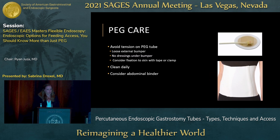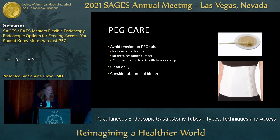Care after PEG tubes is really important to prevent complications including early dislodgement. The key is avoiding tension on the PEG tube — keep that external bumper loose, as it often swells for the first 48 hours after tube placement and you don't want buried bumper syndrome or tube dislodgement. Avoid putting dressings underneath the bumper to prevent tension, and consider fixating the tube with tape or a tube clamp to prevent tension when hooked up for tube feeds. Clean around the tube daily with soap and water to prevent infection, and for high-risk patients, consider an abdominal binder.